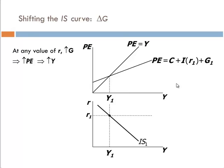At any value of R, so just any given value of R - here we picked R1 but that's arbitrary - let government spending go up. If government spending goes up, then planned expenditure goes up, and then Y goes up.